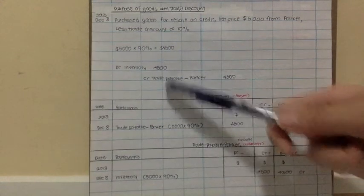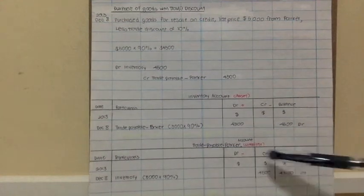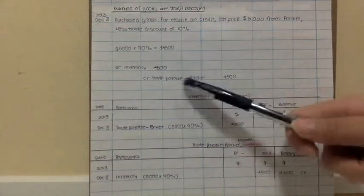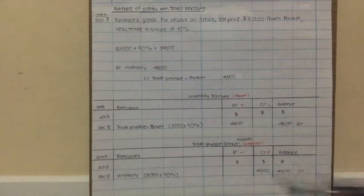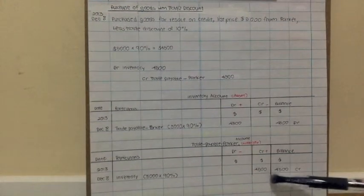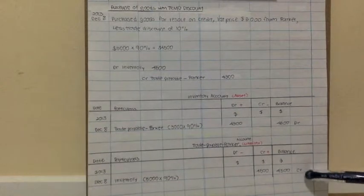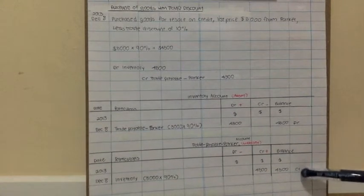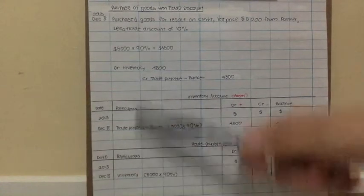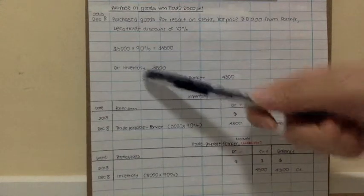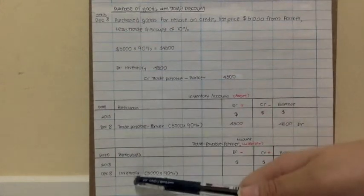Now if you have to open another one which is the trade payable Parker account, it is actually a credit $4,500. So credit $4,500 will give you a balance of $4,500 credit. The details would then be the opposite of this double entry which is inventory.